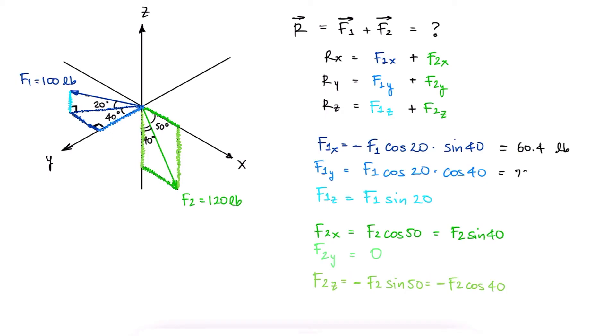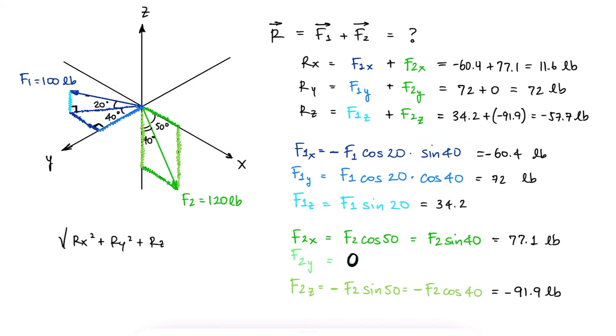With the values for the components of F1 and F2, we can find the components of the resulting force R, and with them in the Pythagorean theorem, the magnitude of the R vector.